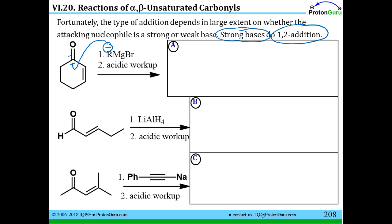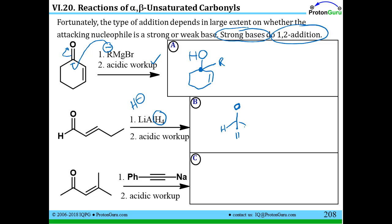That means you kind of just ignore the fact that the alkene is even there and do the typical nucleophilic addition that we see for any other aldehyde or ketone. We draw our structure in, have the alkene there, add the R group to what used to be the carbonyl carbon, push the minus charge onto the O, and the O gets protonated in the acidic workup. Same thing with a hydride — we punitively think of this as H minus, a very unstable species — so we add the hydride to the carbonyl carbon, protonate in the acidic workup, and you've got your final product.